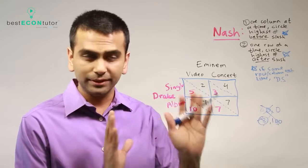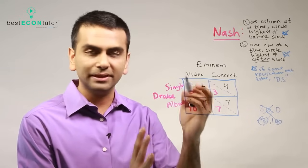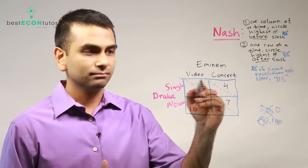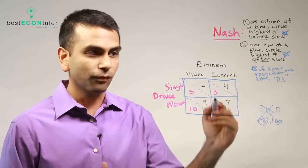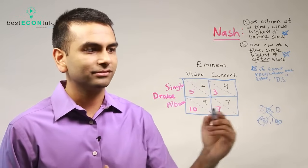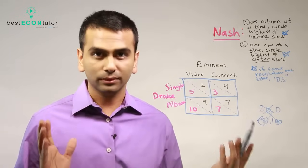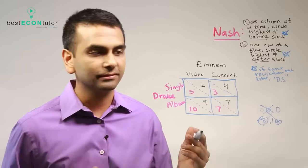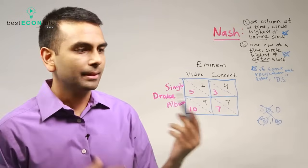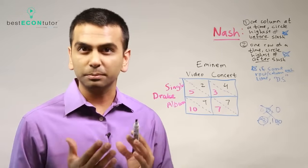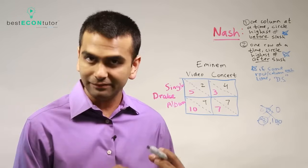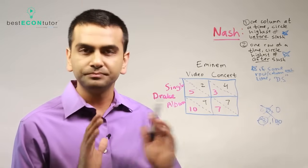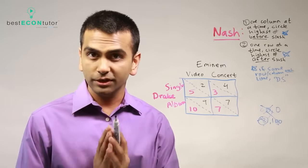Now that we understand how this works and what these mean, there are four possible outcomes of the game - these four cells, these four boxes. The Nash equilibrium is the one where we'll sort of end up. That's what's expected to happen if both people are trying to maximize their own profits, assuming that the other guy is also trying to maximize their own profits. Here's how we can do this.